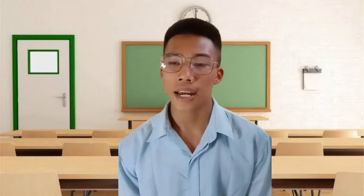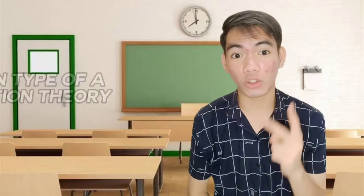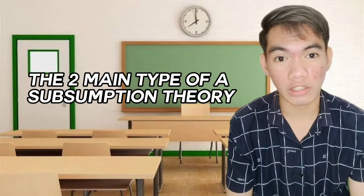Let's proceed to the two main types of subsumption: derivative subsumption and correlative subsumption. Derivative subsumption describes the situation in which new information you learn is just an example of information you have already learned.